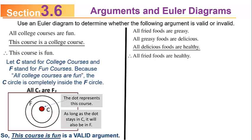Let's do another — a perfect illustration of that point. The premises are: all fried foods are greasy, all greasy foods are delicious, all delicious foods are healthy. The conclusion is therefore all fried foods are healthy. You might say these premises aren't all true — for instance, 'all delicious foods are healthy' — but the argument's validity only depends on whether the conclusion follows if the premises are accepted.